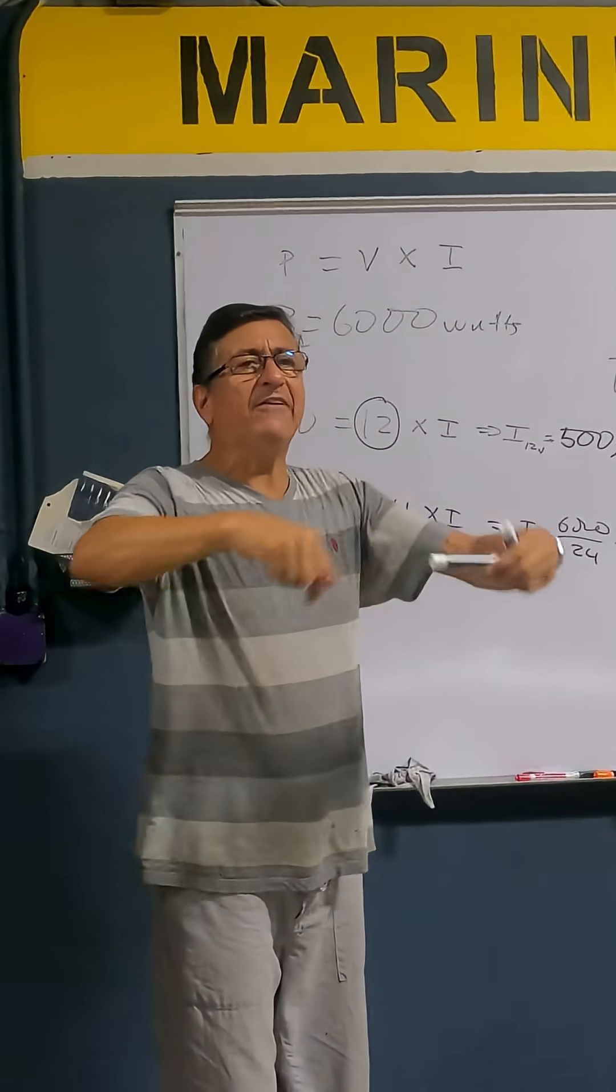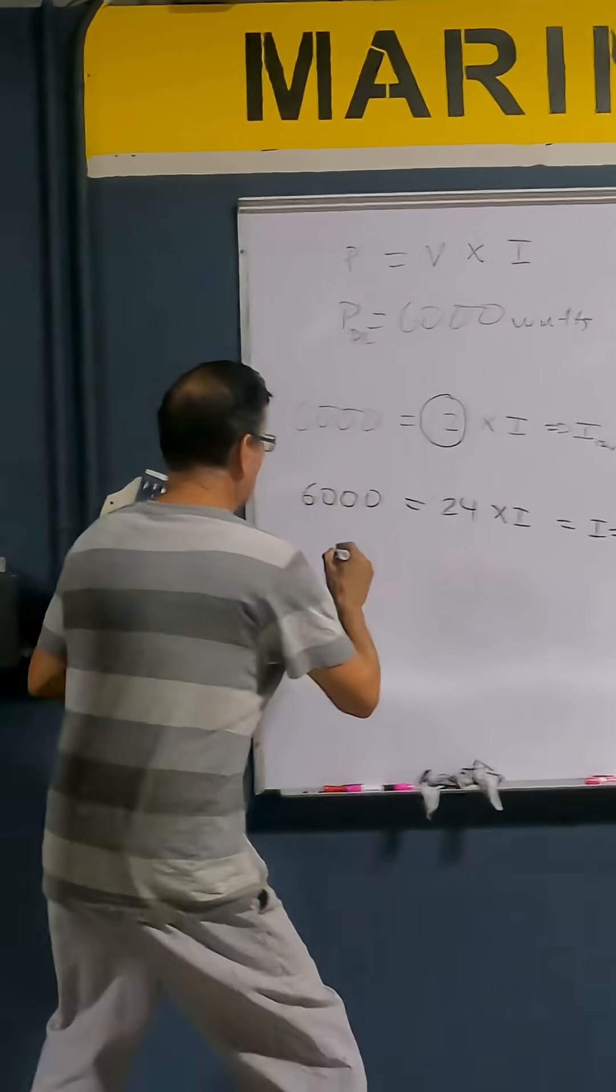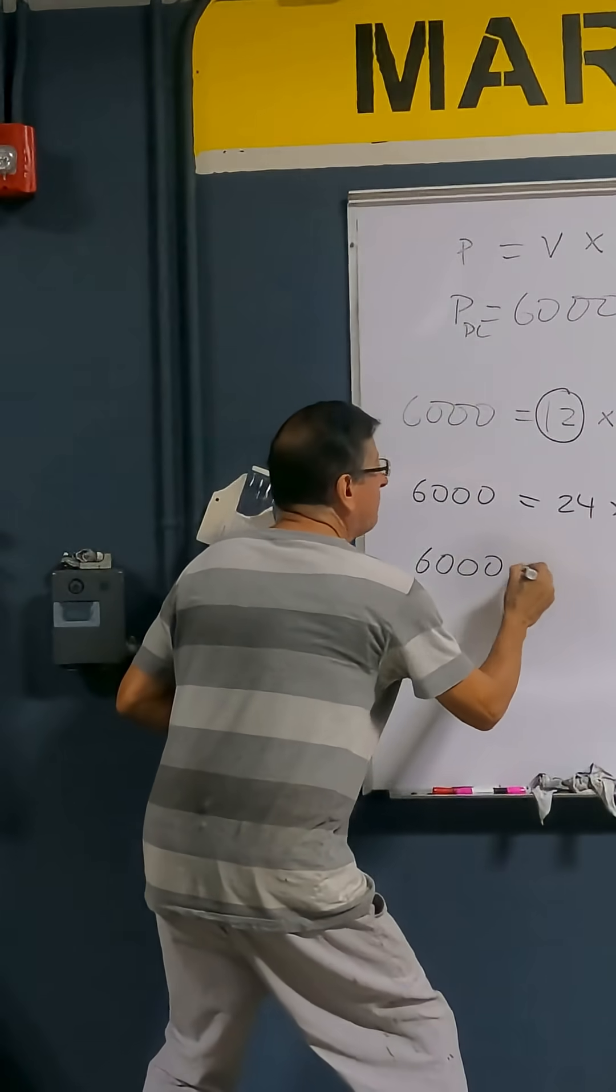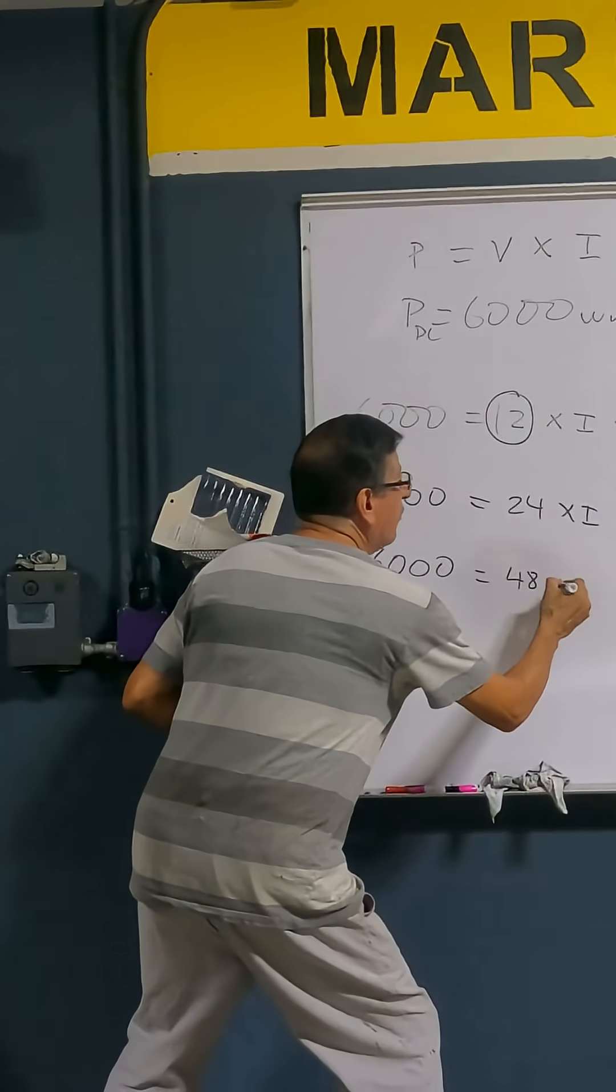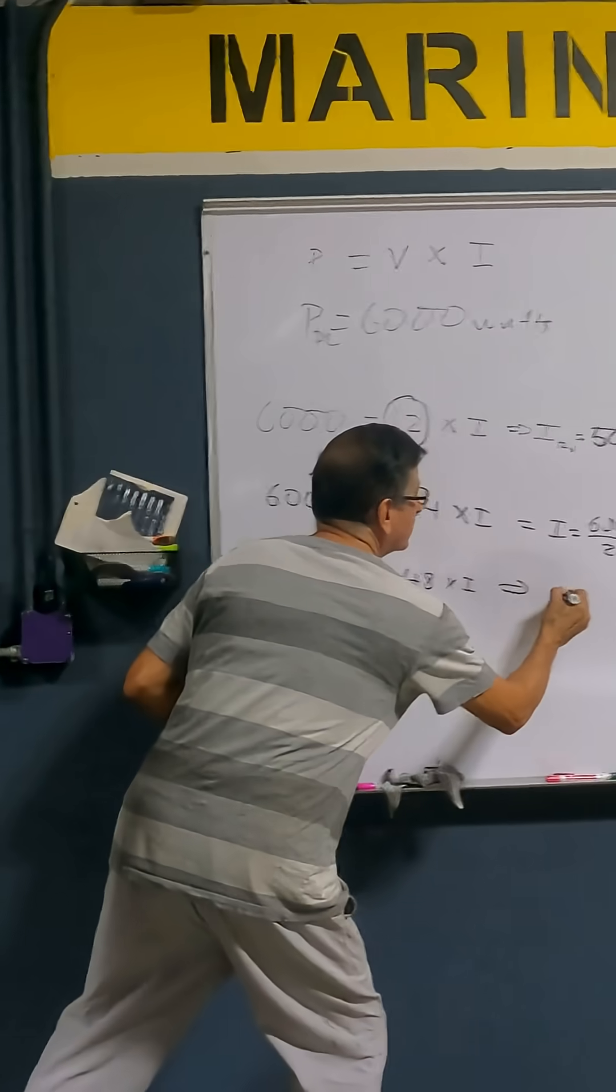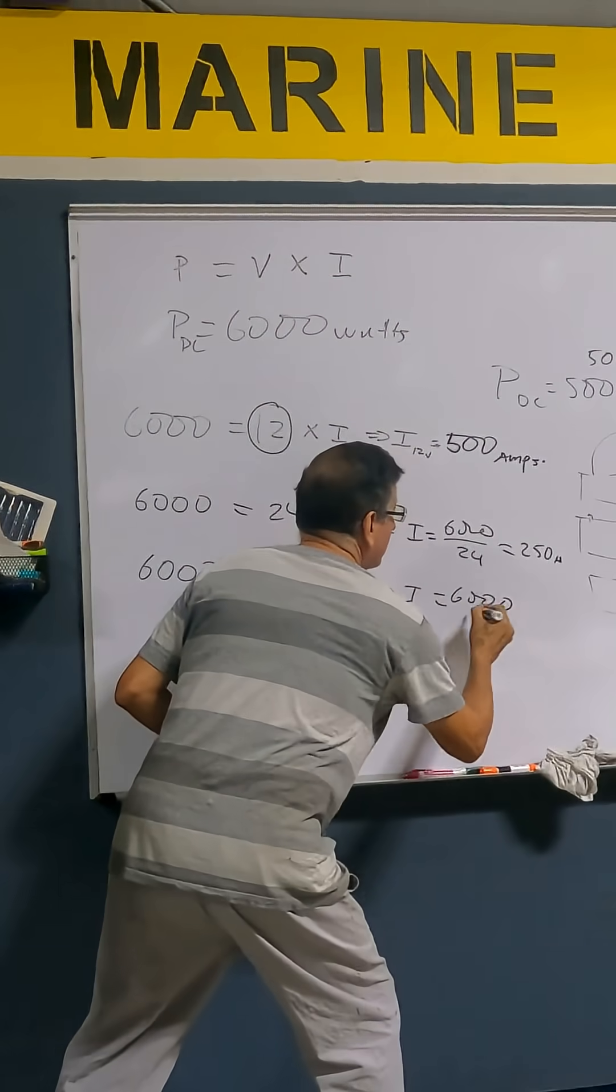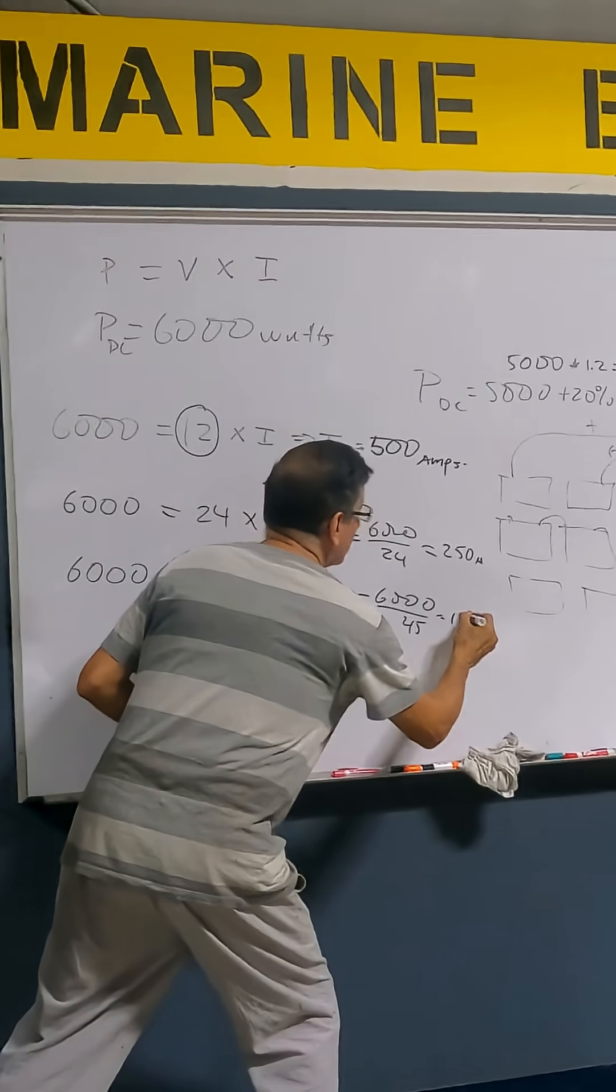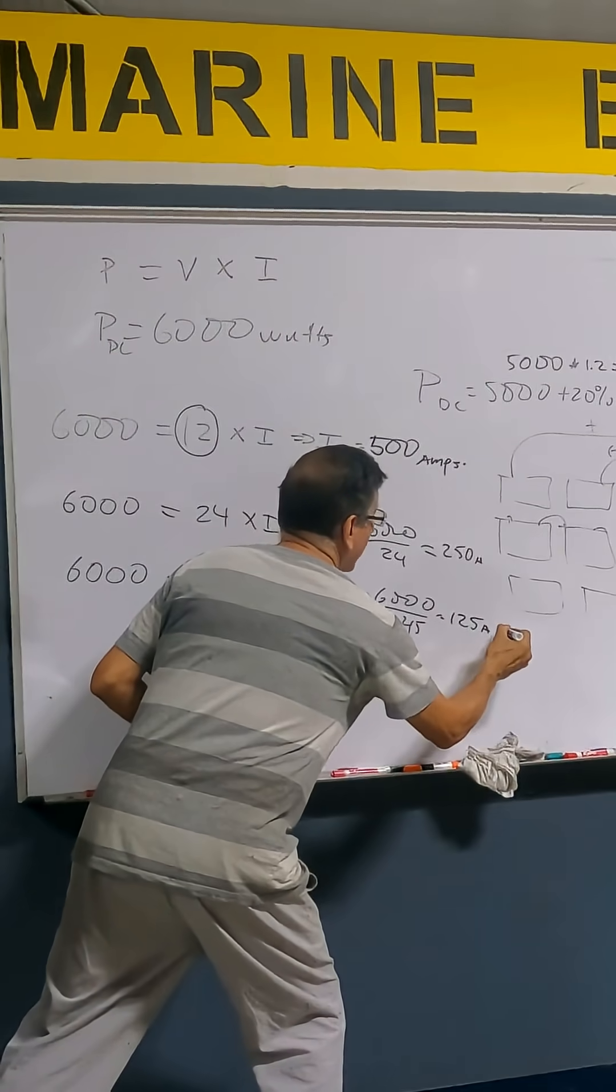Now, I am going to organize the batteries in 48 volts. Okay, the same amount of power, but right now 48 volts. How much should be the intensity? It's 6,000 divided by 48. How much is that? 125 amps.